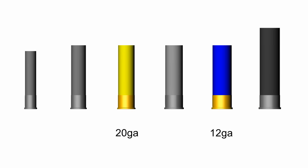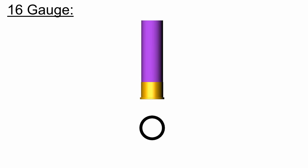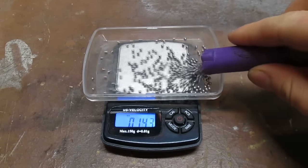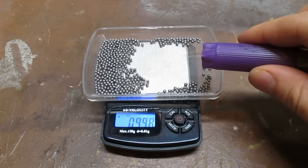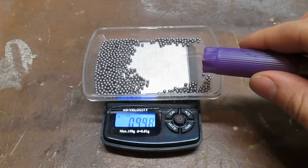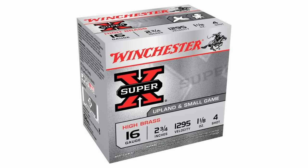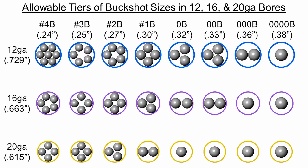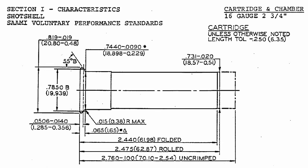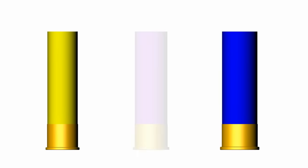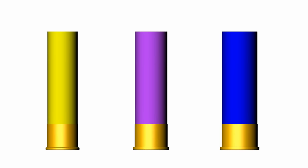Between the popular 12 and 20 gauges lies a much less prevalent 16-gauge, with a theoretical .663-inch bore diameter, though you may also see it described as .662 or .665. As its gauge number suggests, the 16-gauge is practically tailor-made for a 1-ounce shot load, but it also does well loaded down to 7/8 of an ounce or up to 1 and 1/4 ounces. It can handle shot big enough to knock just about anything out of the air, and it'll even fit larger buckshot reasonably well.